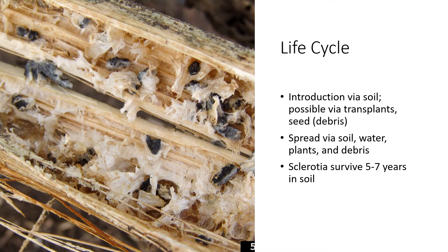The sclerotia are irregularly shaped survival structures that are very hard, dry out easily, and are very long-lived. In fact, they can survive in soil five to seven years without a host. Once Sclerotinia establishes in a field or high tunnel, it is very hard to get rid of simply because of this long-term survival.